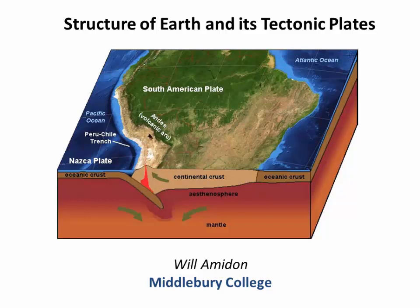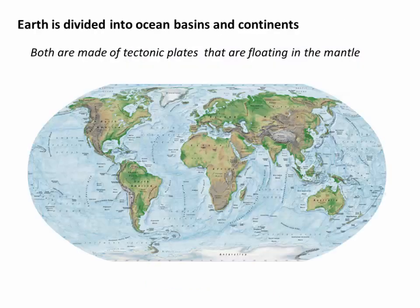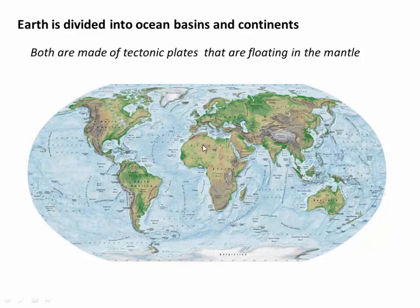Welcome to this video on the structure of Earth and tectonic plates. If you've ever looked at a physiographic map of the Earth, you might have noticed that Earth is divided into both continents, where we live, and then deeper ocean basins, where fish and sharks live. Although we take this for granted, if you stop and think about it — why does this make sense? We know all of Earth is made of rock, so there must be rock beneath the oceans and rock beneath the continents. So why are the continents sticking above sea level and the floor of the ocean sitting below sea level?